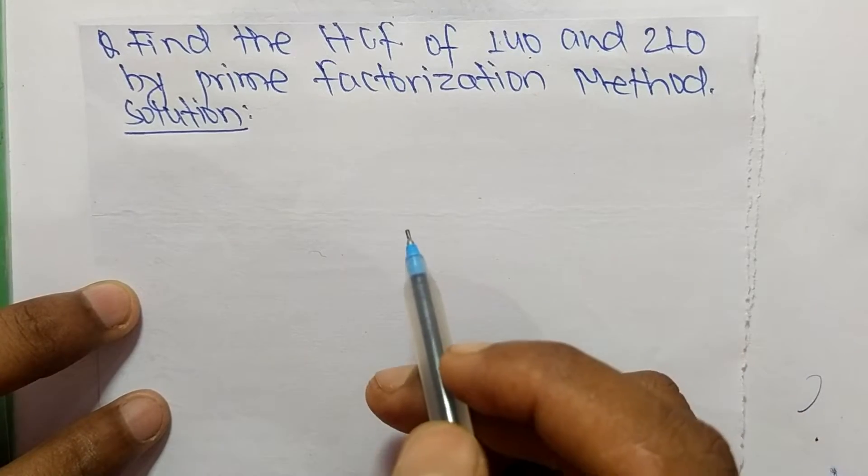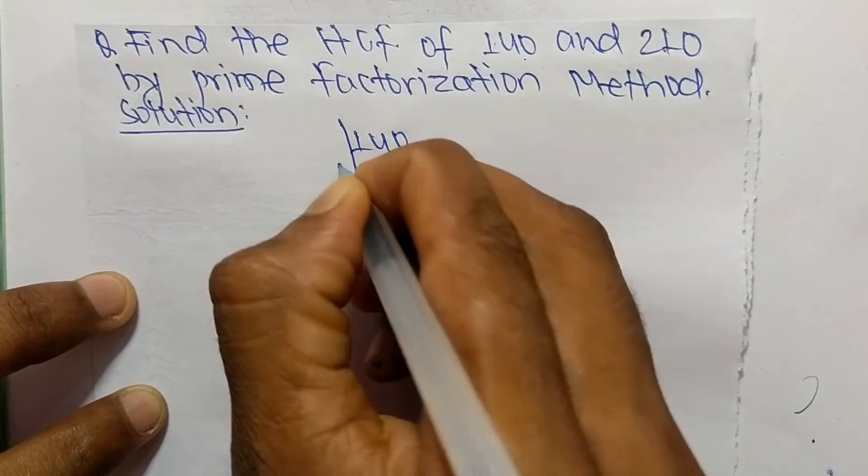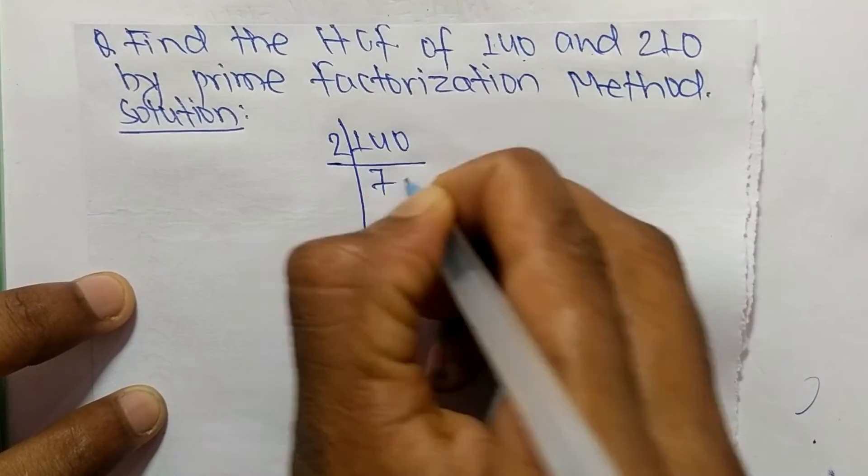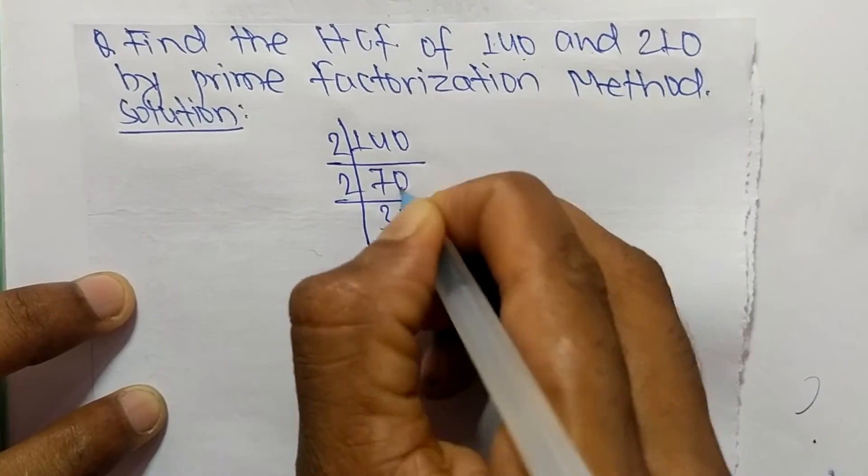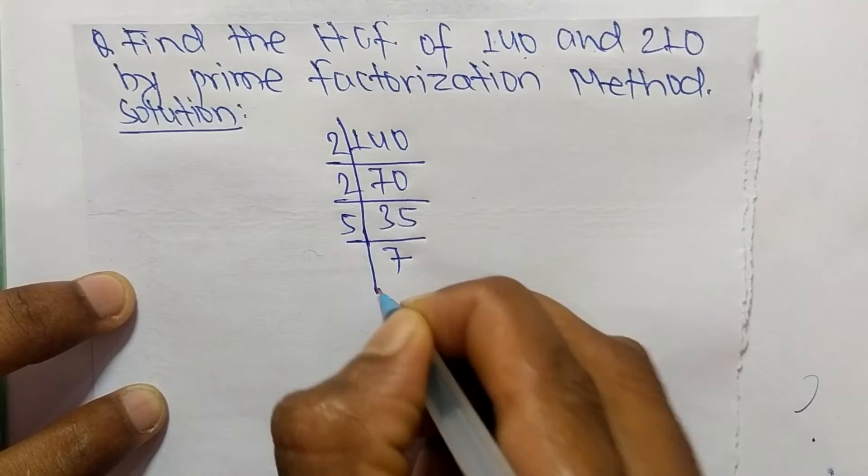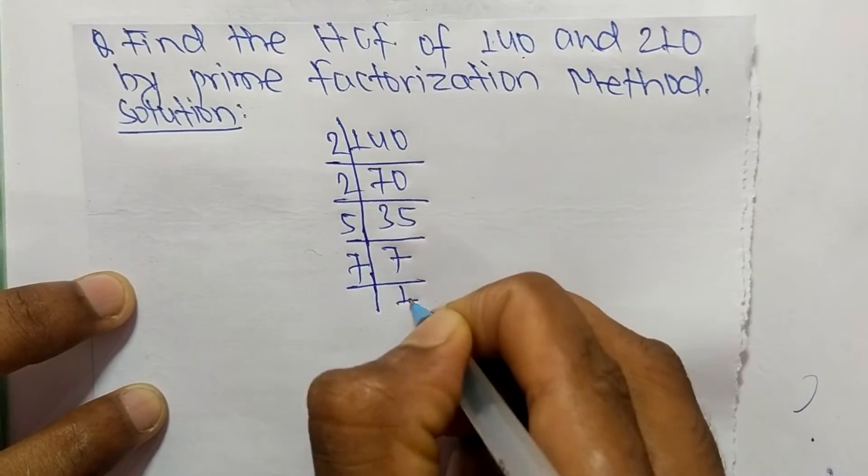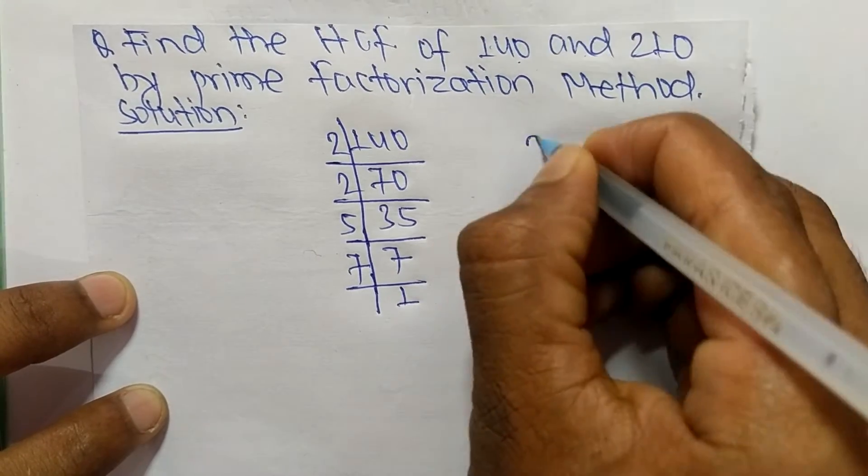First, we find out the prime factors of 140. It is 2 times 70 equals 140, 2 times 35 equals 70, 5 times 7 equals 35, and 7 times 1 equals 7. These are the prime factors.